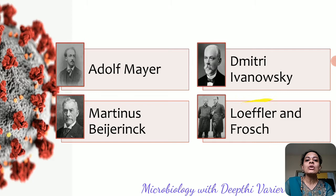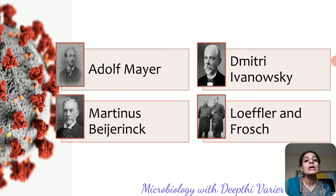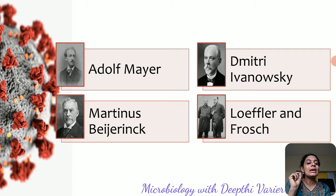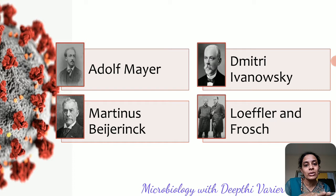Then we had Dmitry Ivanovsky, who also worked with the same disease. He found that when infected sap was passed through a bacterial filter — a Chamberland filter — it was still able to retain the capacity for infection. This means, in retrospect, that the infection was being caused by an agent smaller than bacteria, one that could pass through the Chamberland filter which ideally should retain all organisms.